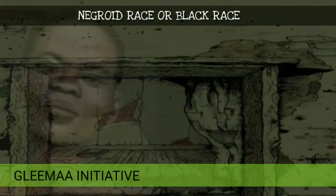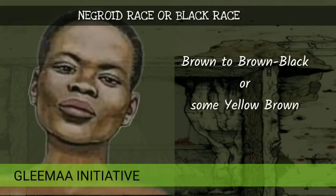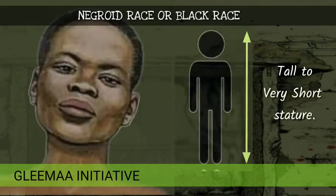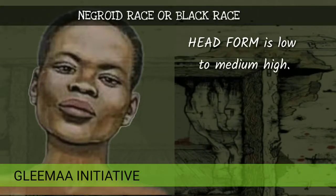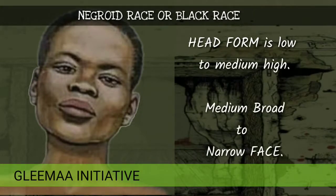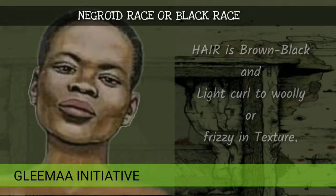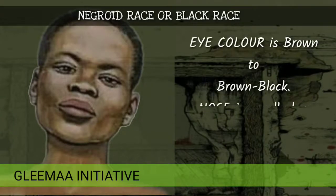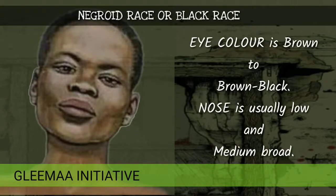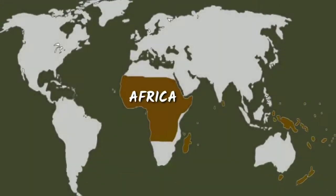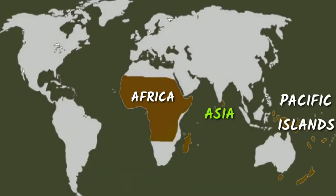Negroid race or black race: brown to brown-black or some yellow-brown skin color, tall to very short stature, head form is low to medium high, medium broad to narrow face, hair is brown-black and light curl to woolly or frizzy in texture, eye color is brown to brown-black, nose is usually low and medium broad. They are found in Africa, Asia, Pacific Islands, etc.